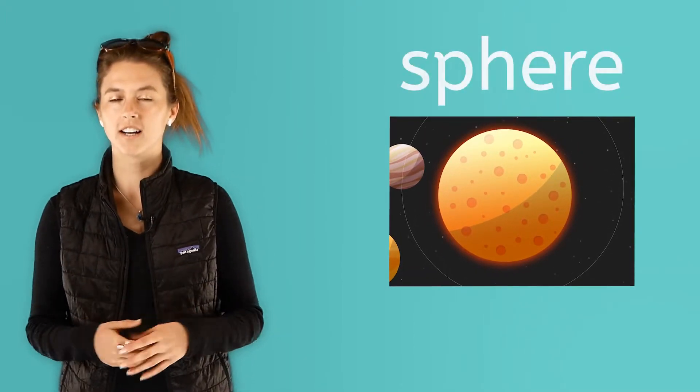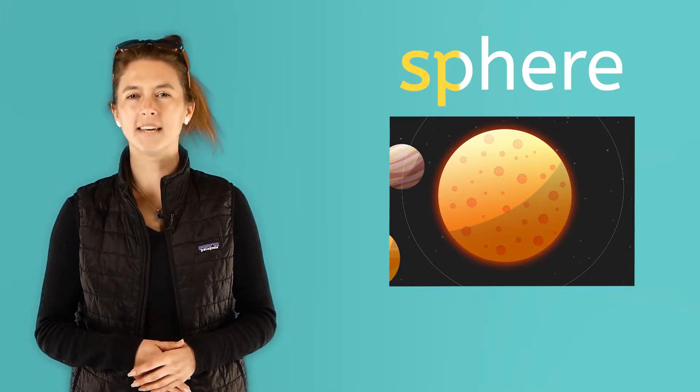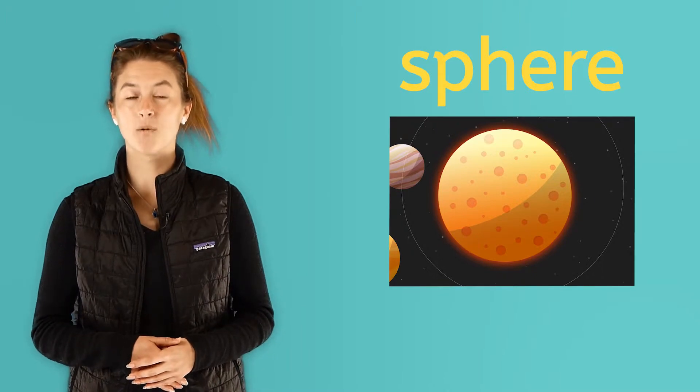But if we could take a trip into outer space and go see the sun close up, we would see it is really the shape of a ball. This shape is called a sphere. Spell sphere with me. S-P-H-E-R-E, sphere. That is one big ball!